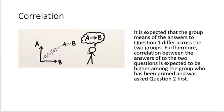Now, it's expected that the group means, that is the averages of the answers to question one, differ across the two groups. And furthermore, the correlation between the answers of the two questions is expected to be a lot higher among the group who's been primed and was asked question two first.